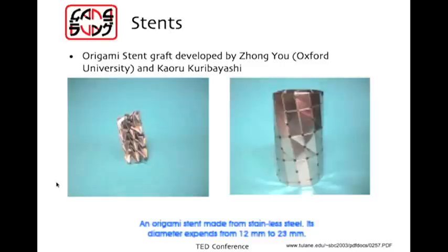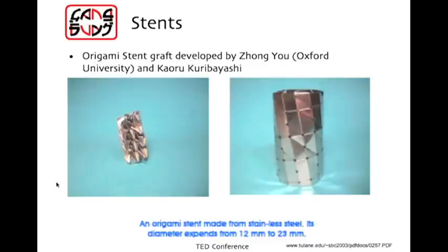And this example is the latter. This is a heart stent developed by Zhong Yu at Oxford University. It holds open a blocked artery when it gets to its destination, but it needs to be much smaller for the trip there through your blood vessels. And this stent folds down using an origami pattern based on a model called the water bomb base.